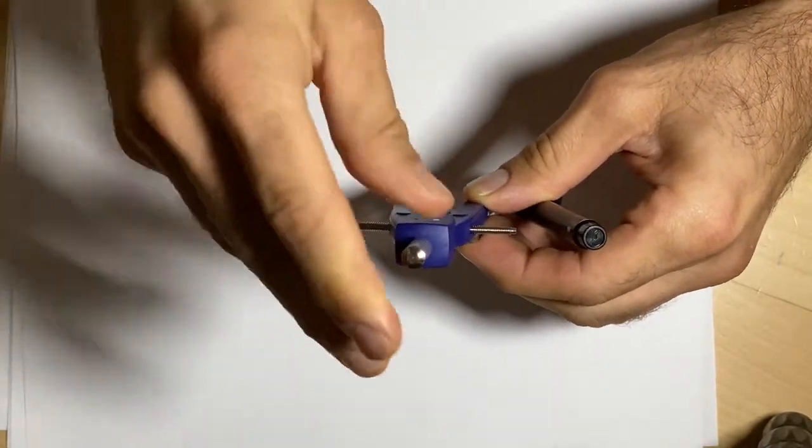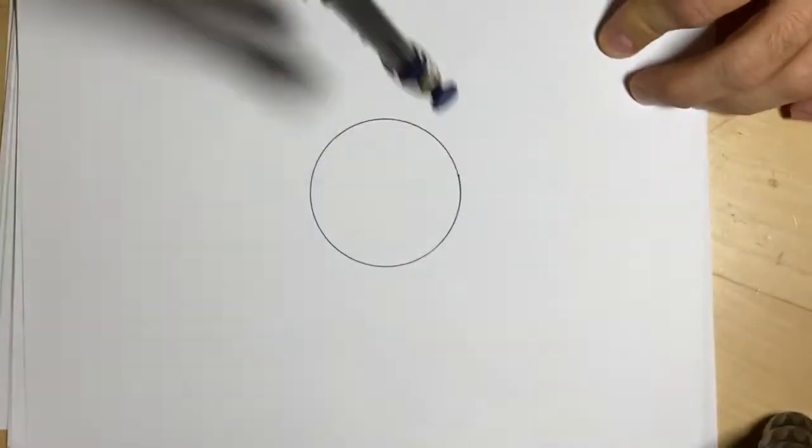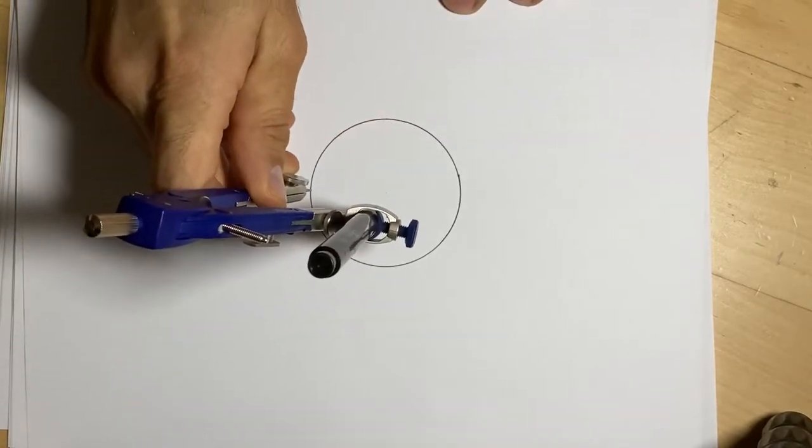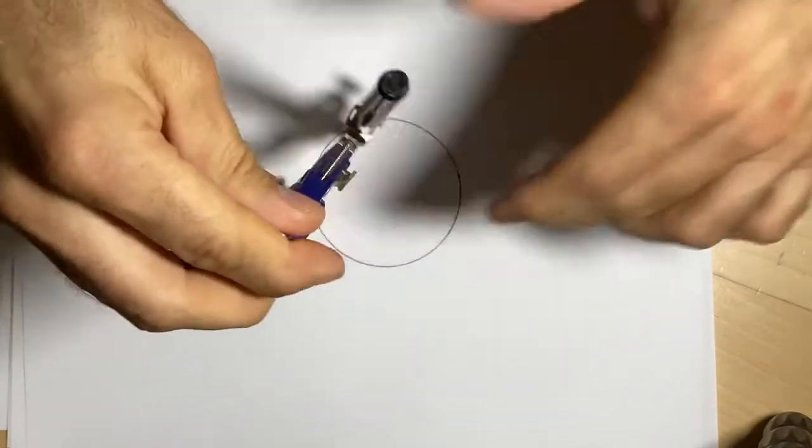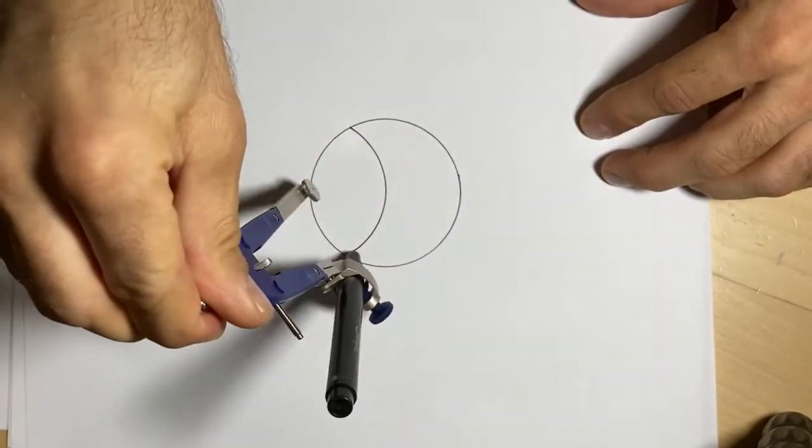First you start with one circle. Then you're going to place the point of the compass on the edge of the circle and you can go just from edge to edge if you don't want the outside to be drawn, but I'm going to draw the whole circle.